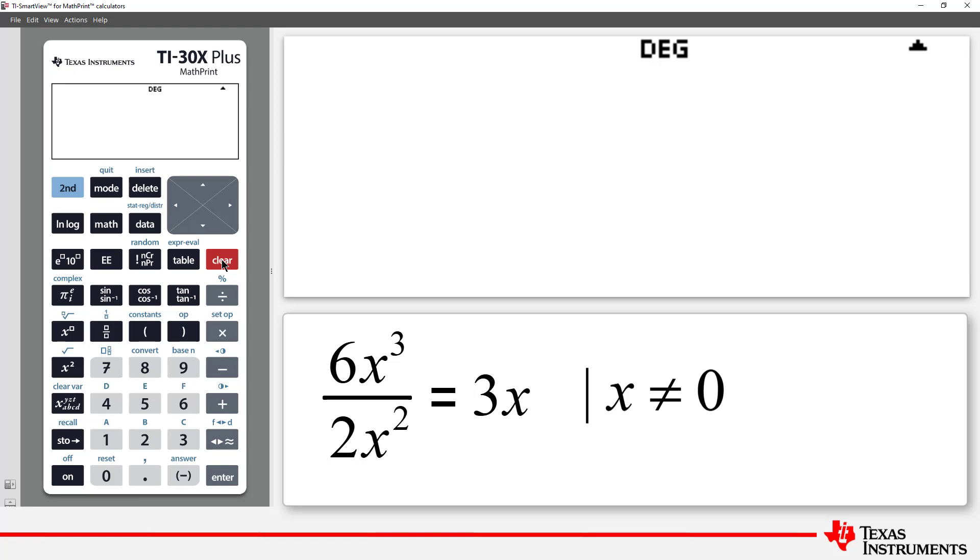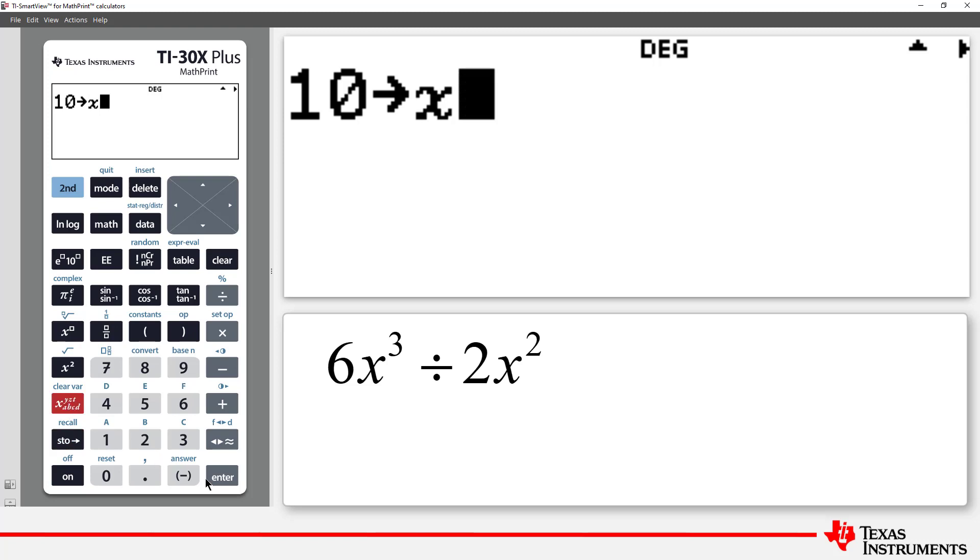What does all of this have to do with scientific notation? Well, let's store x as 10. So our original expression becomes 6x cubed divided by 2x squared.